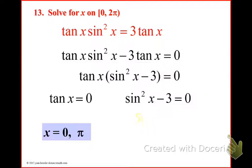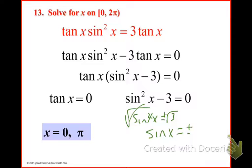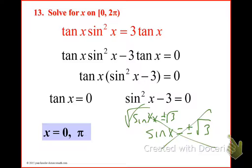That would give us sine squared x equal to 3. Then we would take the square root, so sine x equals positive or negative square root of 3. Where is sine equal to positive or negative square root of 3 on the unit circle? Nowhere — so it's out. So that was option 2: we moved 3 tangent x to the other side, which made factoring easy, then factored the tangent out.